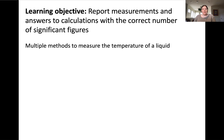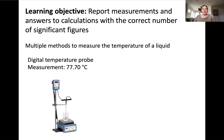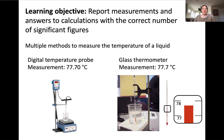In the lab, there may be multiple instruments that can be used to make a particular measurement. Let's say that you want to measure the temperature of a liquid. You may have access to a digital temperature probe or perhaps an alcohol thermometer. These provide different measurements, but which is correct, or is either correct?